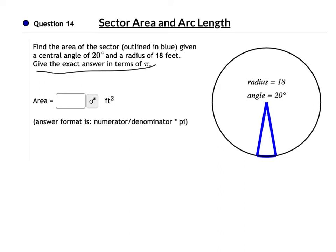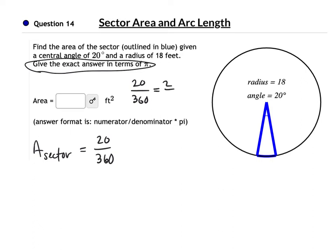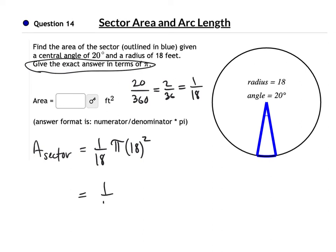In question 14, we're finding the exact answer. Our central angle is 20 degrees — that would be 20 over 360 of the circle. Reducing: divide by 10 to get 2 over 36, then divide by 2 to get 1 over 18. It's 1 eighteenth of the circle. The area equals 1 eighteenth times pi times the radius squared — 18 squared is 18 times 18. The 18 in the denominator and one of the 18s cancel, giving 18 pi over 1, or 18 pi.